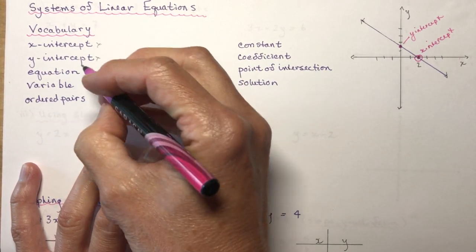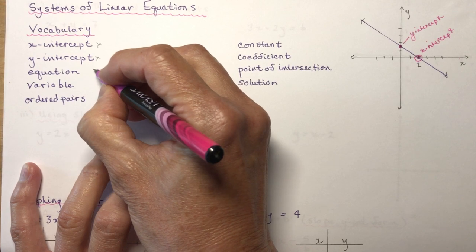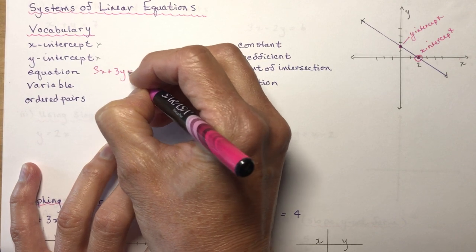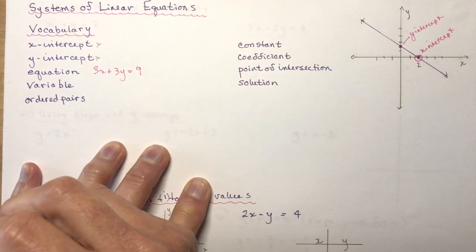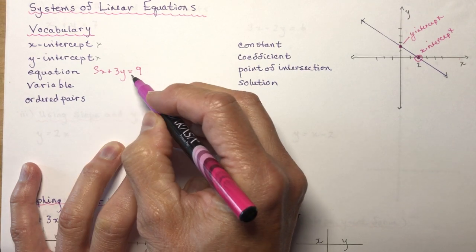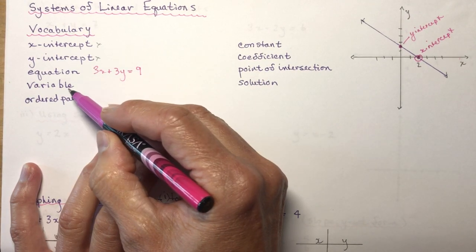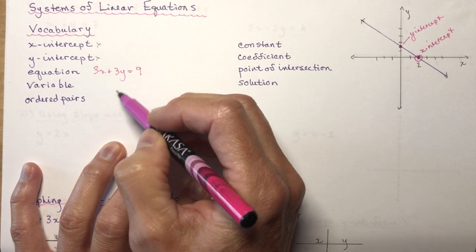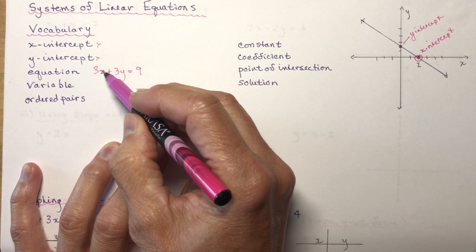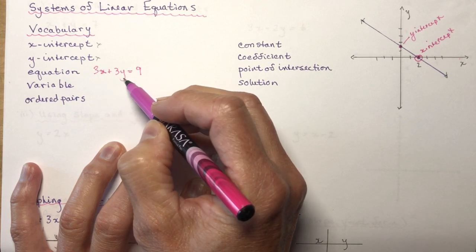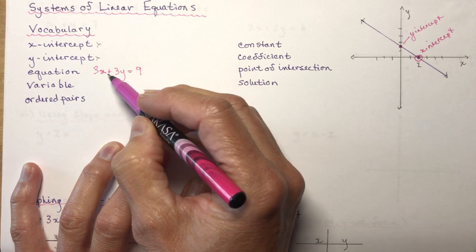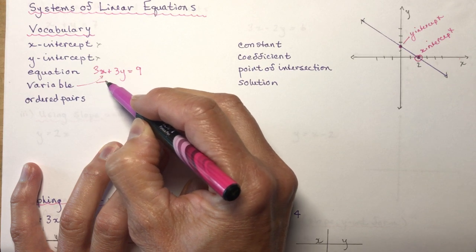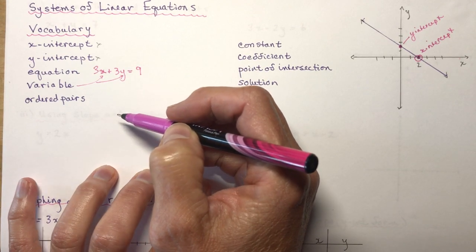An equation has to have an equal sign in it. So something like 3x plus 3y equals 9 — there's an equation. It has an equal sign and it has two variables. The variables are the things that you can change in an equation. I put in a value for x and a value for y, and I need to get 9 in order for it to be part of this equation. Variables are these letters, introduced in grade 9.